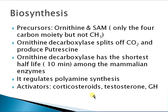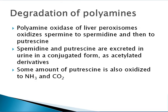Biosynthesis: the precursors are ornithine and S-adenosylmethionine — the latter contributing only the carbon moiety, not the methyl group. Ornithine is decarboxylated with loss of carbon dioxide to produce putrescine. Ornithine decarboxylase has the shortest half-life of about 10 minutes among mammalian enzymes and regulates polyamine synthesis; its activators include corticosteroids, testosterone, and growth hormone.